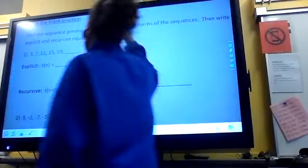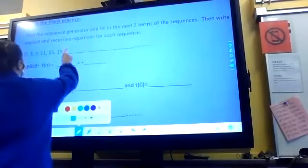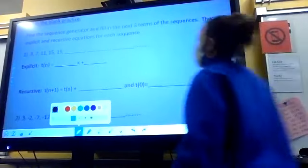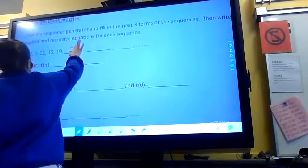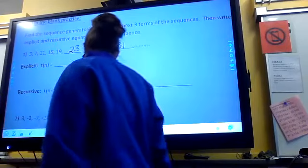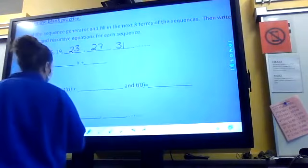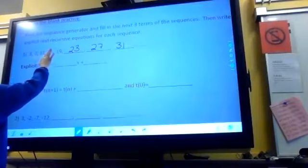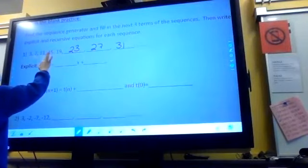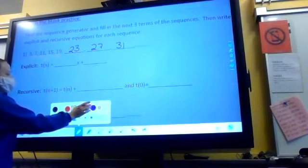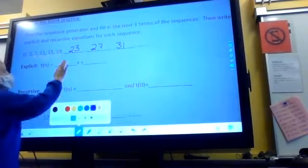Three, seven, 11, 15, 19. What would come next? 23. I love it. So we'd have 23, 27, 31. What are we doing? Excellent. We are adding four each time.